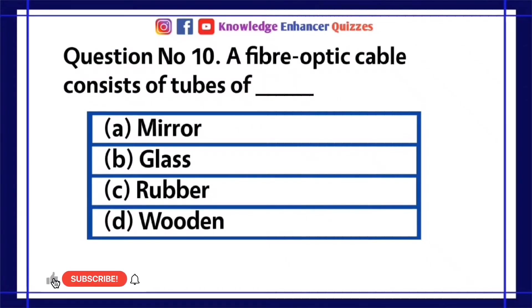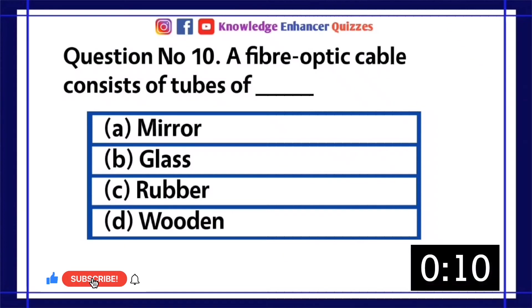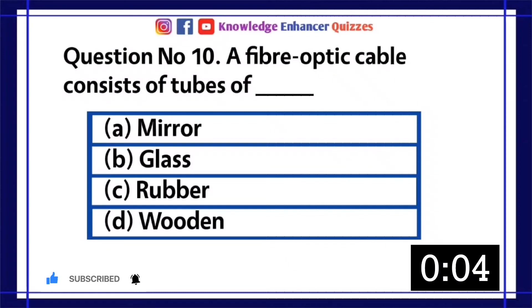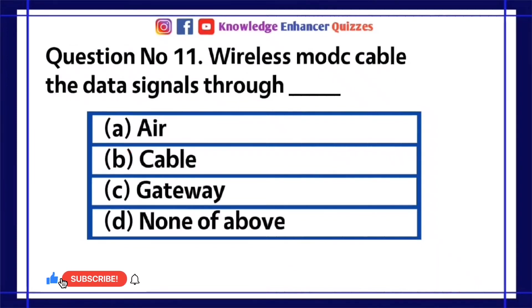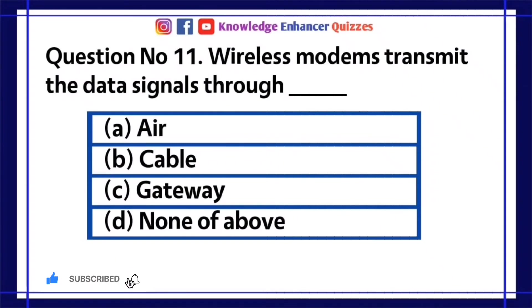Question number 10: Fiber optic cable consists of tubes of dash. A. Mirror. B. Glass. C. Rubber. D. Wooden. Option B is the right answer.